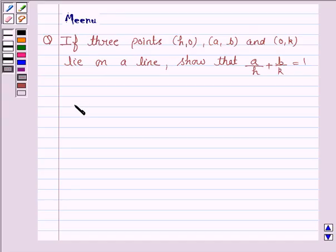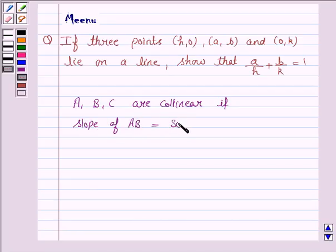Now, if we have three points, say A, B, C, then they lie on the same line or they are collinear if slope of AB equals slope of BC. So, this is the key idea.